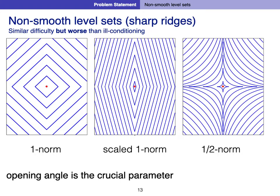The last difficulty is the non-smooth level set. The difficulty of non-smooth level sets is similar to ill-conditioning, but is usually worse. Especially if the opening angle at the corner of the level set is zero, like in the right-most figure, the standard CMA-ES fails to converge toward the optimal and a special treatment is required. Therefore, we should avoid such an objective function if possible.